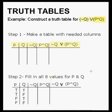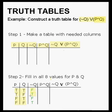Then we start filling this in, starting with P and Q using the same 4 rows: true-true, true-false, false-true, false-false. We fill in one column at a time, starting from left to right. We start with the negation of Q column — all we have to do is negate all the Q values. If Q is true, negation of Q is false. If Q is false, negation of Q is true. This pattern repeats for all four rows, giving us false, true, false, true. So we've got that column done.